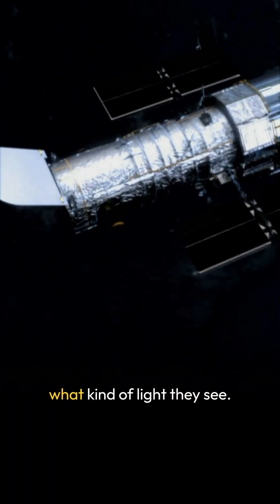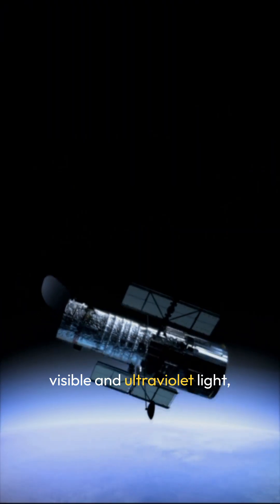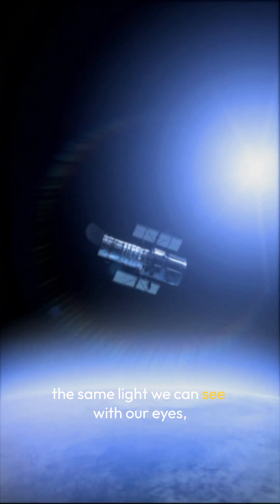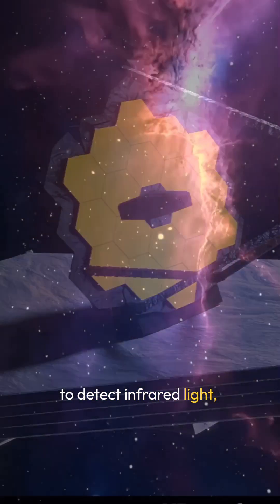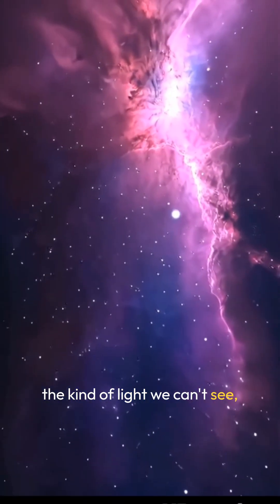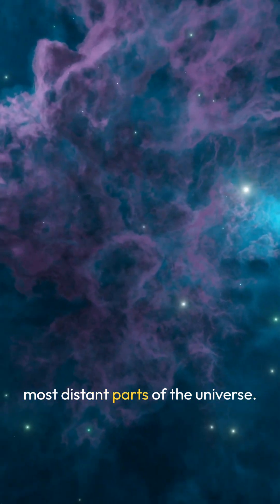First, it comes down to what kind of light they see. Hubble observes mostly visible and ultraviolet light, the same light we can see with our eyes, while JWST is designed to detect infrared light, the kind of light we can't see, but which travels through dust and reveals the coldest, most distant parts of the universe.